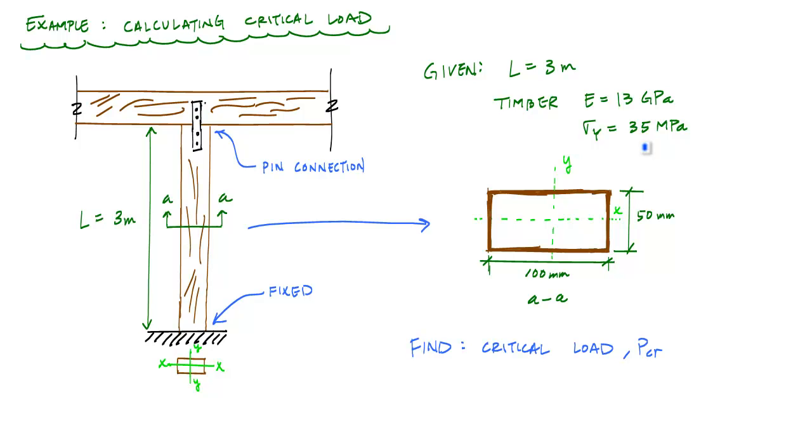And we're going to see how that comes into play later. And what we want to do in this problem is solve for the critical load using the Euler buckling formula. And maybe you've also seen the formula in terms of the radius of gyration as PCR as this equation here, where this KL over R represents what's called the slenderness ratio.